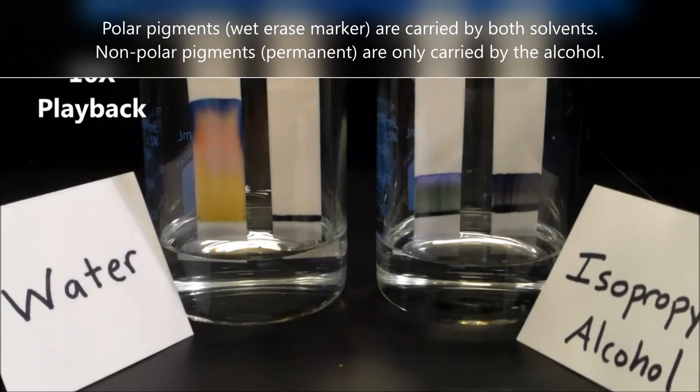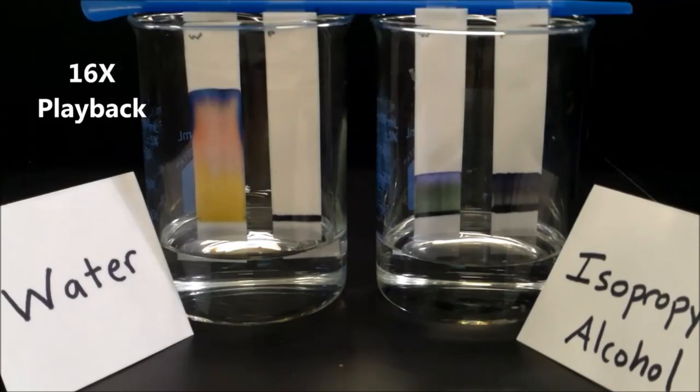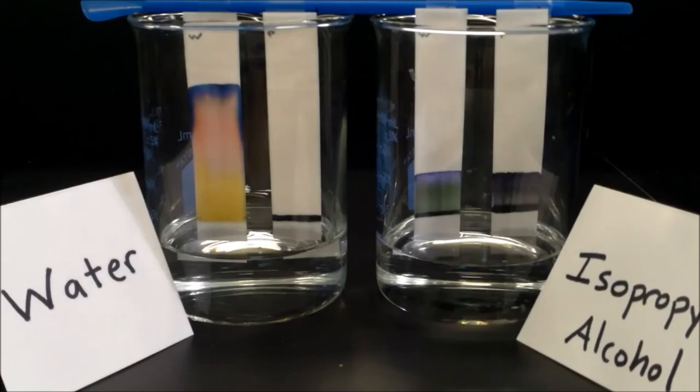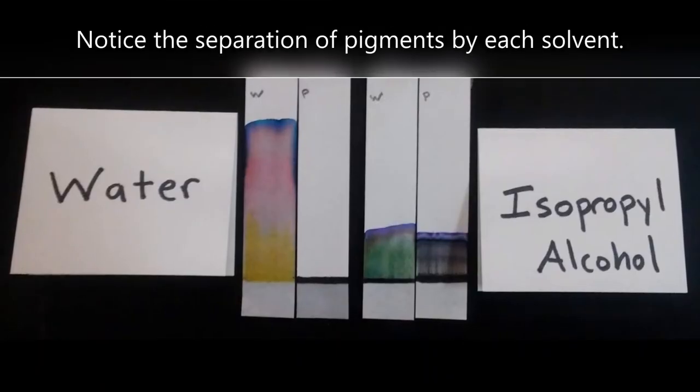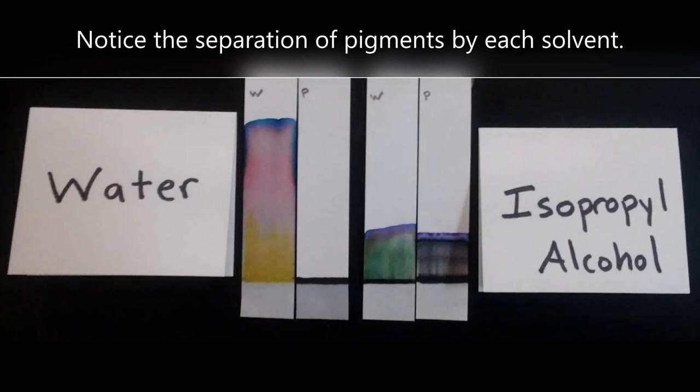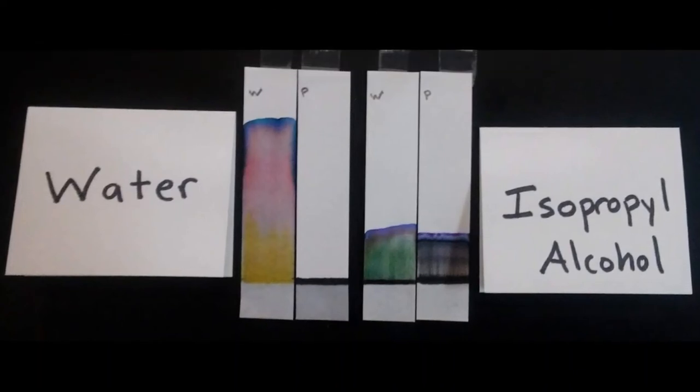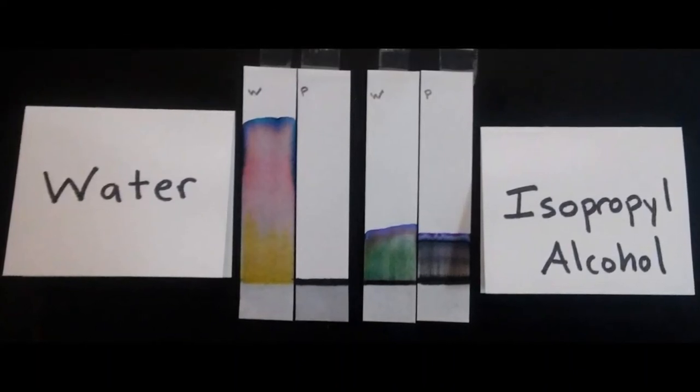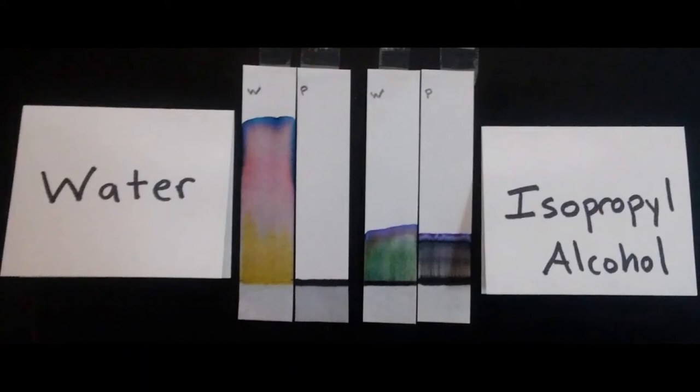The experiment is a good illustration of the saying, like dissolves like. The polar pigments of the wet erase marker will dissolve in water because it's a polar solvent. They will also dissolve in the alcohol because it's somewhat polar. The pigments in the permanent marker are non-polar, so they won't dissolve in water. However, they will dissolve in the alcohol because the alcohol is somewhat non-polar.